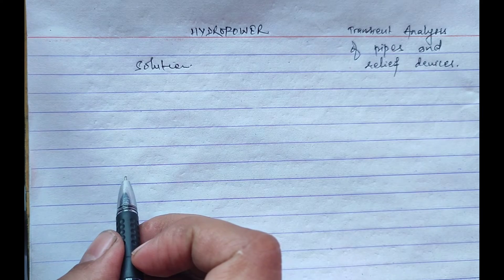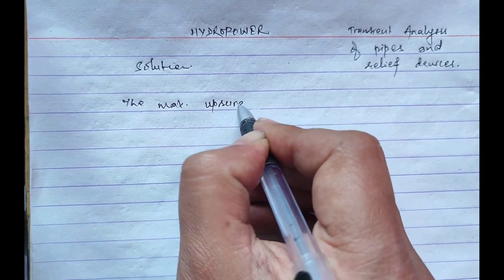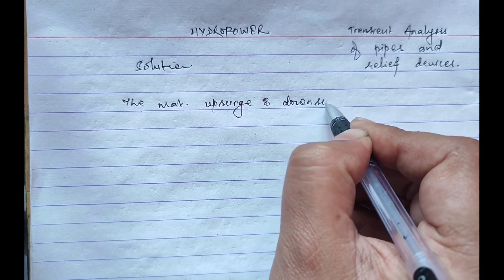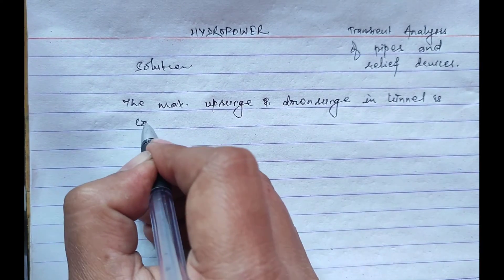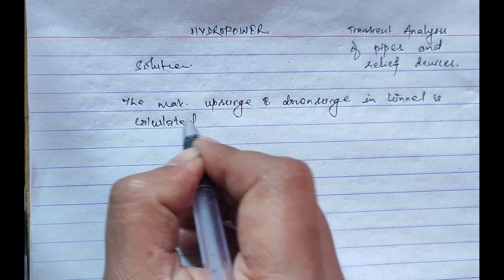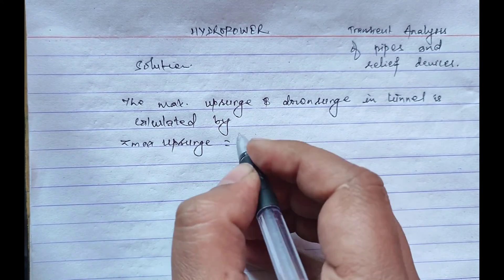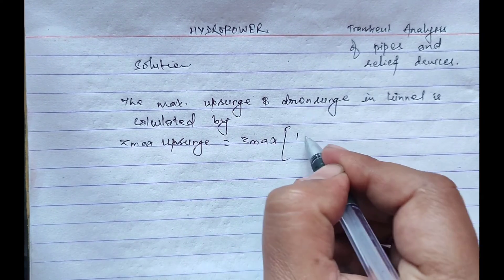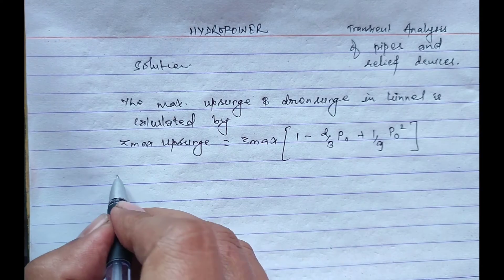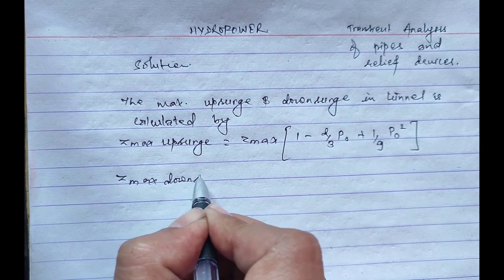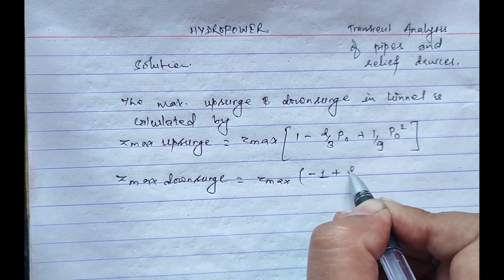The maximum upsurge and downsurge in tunnel is calculated using the formulas: z_max upsurge equals z_max times of 1 minus 2 by 3 P_0 plus 1 by 9 P_0 whole square. Whereas z_max downsurge equals z_max times of minus 1 plus twice of P_0.